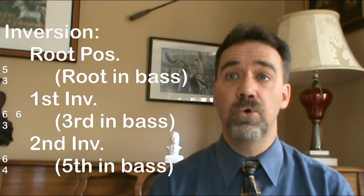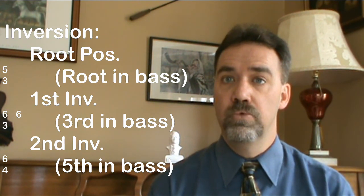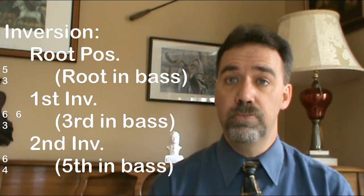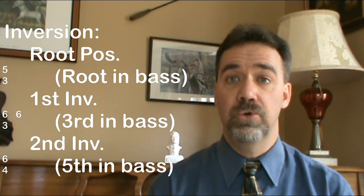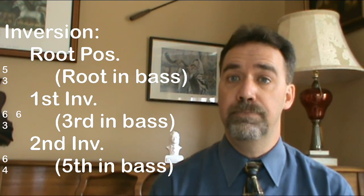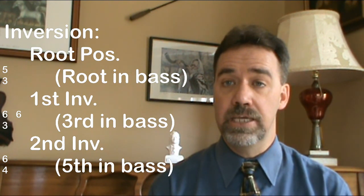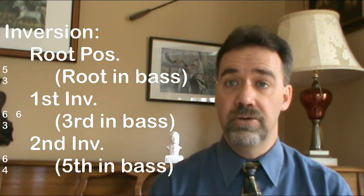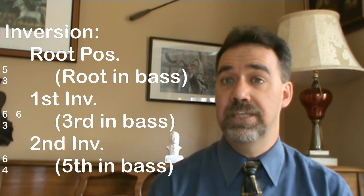Inversion refers to which chord member is in the bass — the lowest pitch in the texture. The placement of the other voices has no bearing on triadic inversion. Root position triads, indicated by five-three or no figure at all, always have the chord root in the bass. First inversion triads, indicated by six-three or simply six, always have the third of the chord in the bass. And second inversion triads, always indicated by six-four, always have the fifth in the bass.